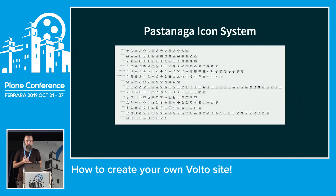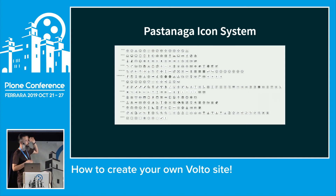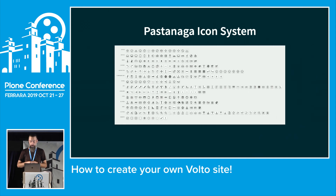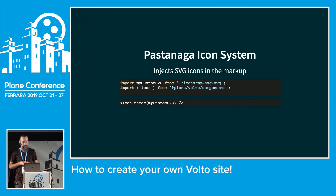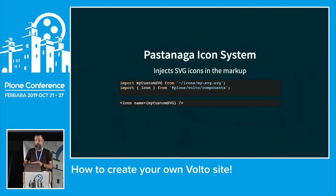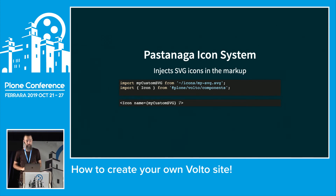Next is the Pastanaga icon system. Pastanaga contains a lot of icons — and there are even more than shown. They can be easily used in Volto by importing a helper component called Icon, where you can either import one of the SVGs from Pastanaga itself or import your own SVG and display them.